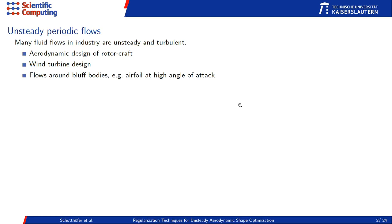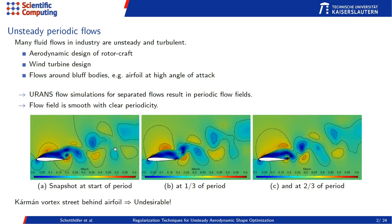Why do we bother with unsteady periodic flows? Many fluid flows in the industry are unsteady and turbulent. For example, aerodynamic design of rotorcraft, wind turbine design, or flows around bluff bodies in general — for example, an airfoil at high angle of attack. You can see here the NACA 0012 airfoil at 17 degrees angle of attack, and the flow is computed with a URANS flow simulation.